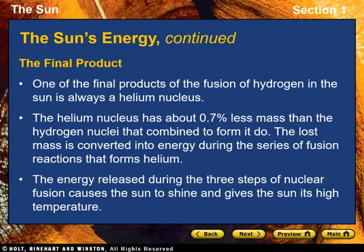One of the final products of the fusion of hydrogen in the sun is always a helium nucleus. The helium nucleus has about 0.7% less mass than the hydrogen nuclei that combined to form it. The lost mass is converted into energy during the series of fusion reactions that forms helium. The energy released during the three steps of nuclear fusion causes the sun to shine and gives the sun its high temperature.